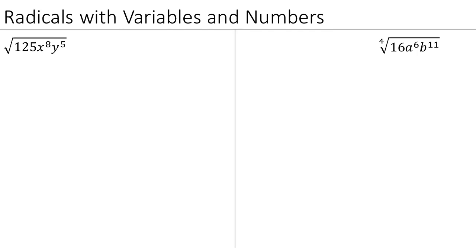We've seen how to simplify radicals with numbers and with variables. When you have a radical involving both numbers and variables, you can focus just on the number part and then just on each variable individually, and then throw it all together at the end. So looking at this first example, we can simplify the square root of 125, the square root of x to the 8th, and the square root of y to the 5th separately.